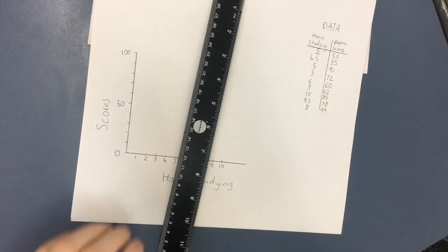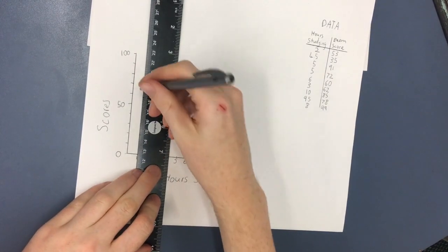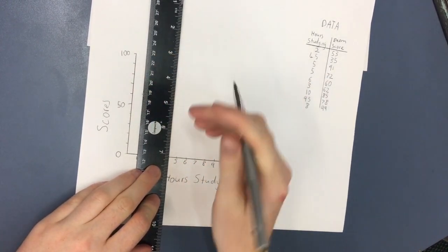Here we have the axes and the provided data. Using the axes, enter the data from the table into the axes, in line with the score and hours studying time.